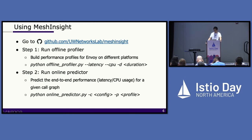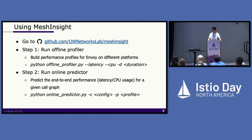MeshInsight is written in Python, and using it is pretty straightforward. First, you need to run the offline profiler, which generates performance profiles for Envoy on different platforms. And once you have the profiles for your development platforms, you can predict the end-to-end performance for specific call graphs using the online predictor. The readme file in the repo has a lot more details.